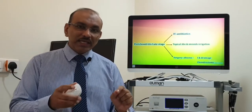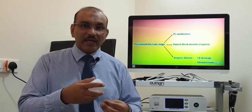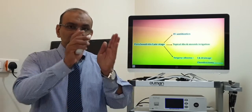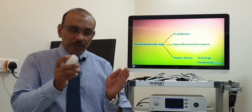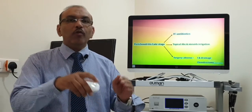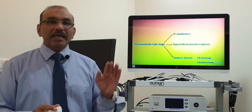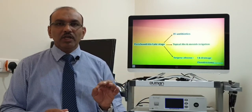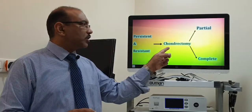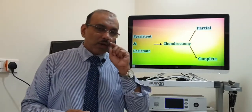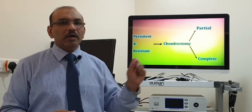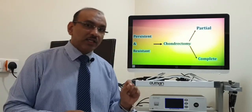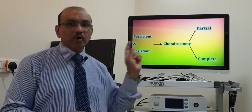In late stage cases, or where there is bacterial resistance and proper treatment is not sought, the infection spreads from the perichondrium inside the cartilage, involving the cartilage itself. In that case, treatment involves removal of the cartilage, called chondrectomy. If only part of the cartilage is involved, we do a partial chondrectomy. If the complete cartilage is involved, we perform a complete chondrectomy.